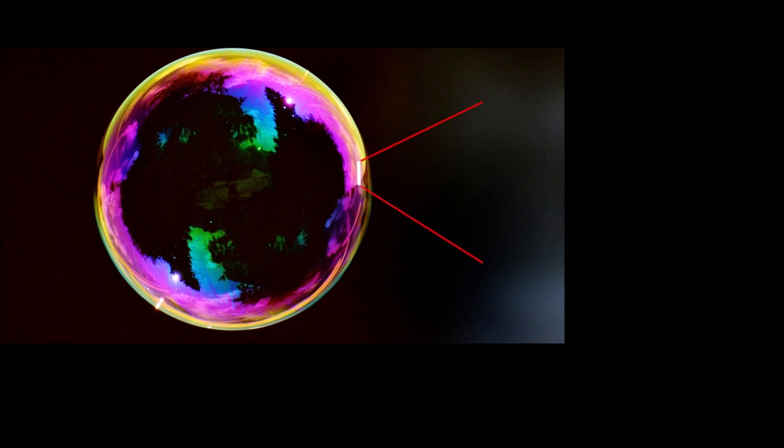So, if we make a section of the bubble, it consists of three different layers: two layers of surfactant molecules, inner and outer layers, and in between, there is a thin water film.